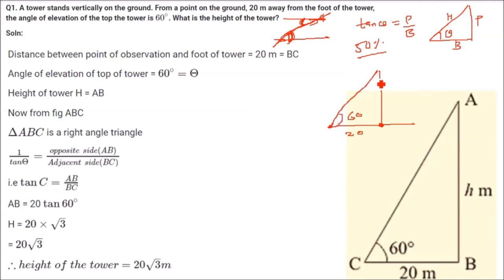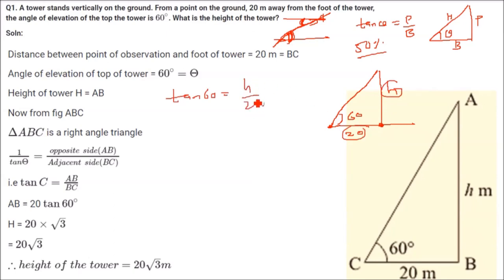What is the height of the tower? Let us assume the height of the tower as h. As I suggested, we will take tan 60. Tan 60 is perpendicular by base, that is h by 20. Tan 60 is root 3 equals h by 20. So h equals 20 root 3. This is the answer.